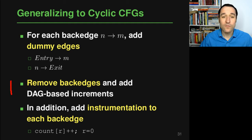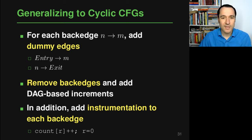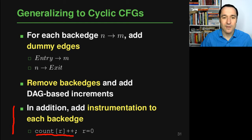Once we have the graph augmented with these dummy edges, we remove the back edges, giving us a DAG — a directed acyclic graph — on which we can apply the existing algorithm as described. Then we take the instrumentation from that algorithm with one small addition: we add instrumentation to every back edge, so each time we go back to a loop header, we take the current value of r, use it as the encoding of the path executed, increment its count in the count array, and then reset the counter r to start over.